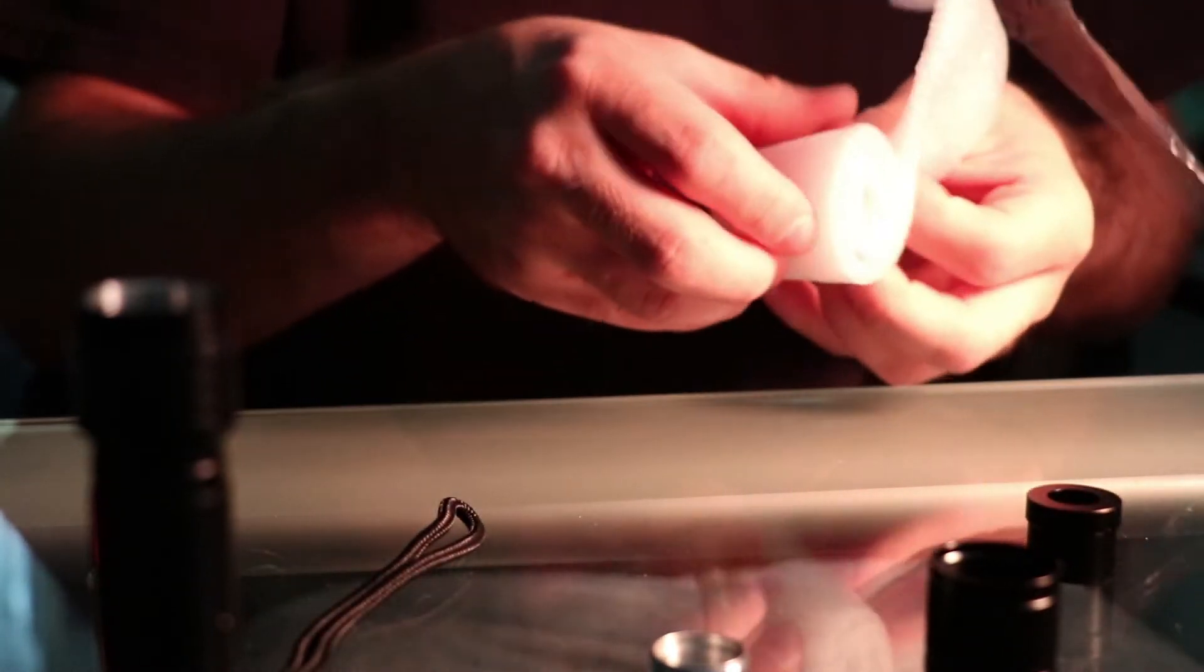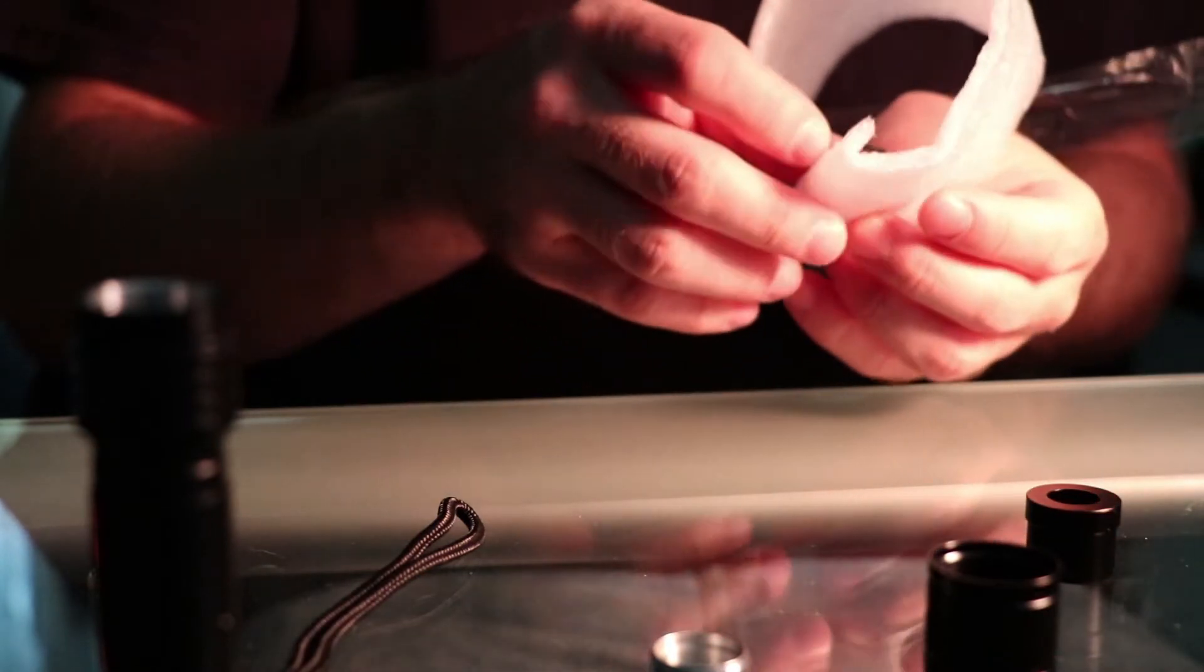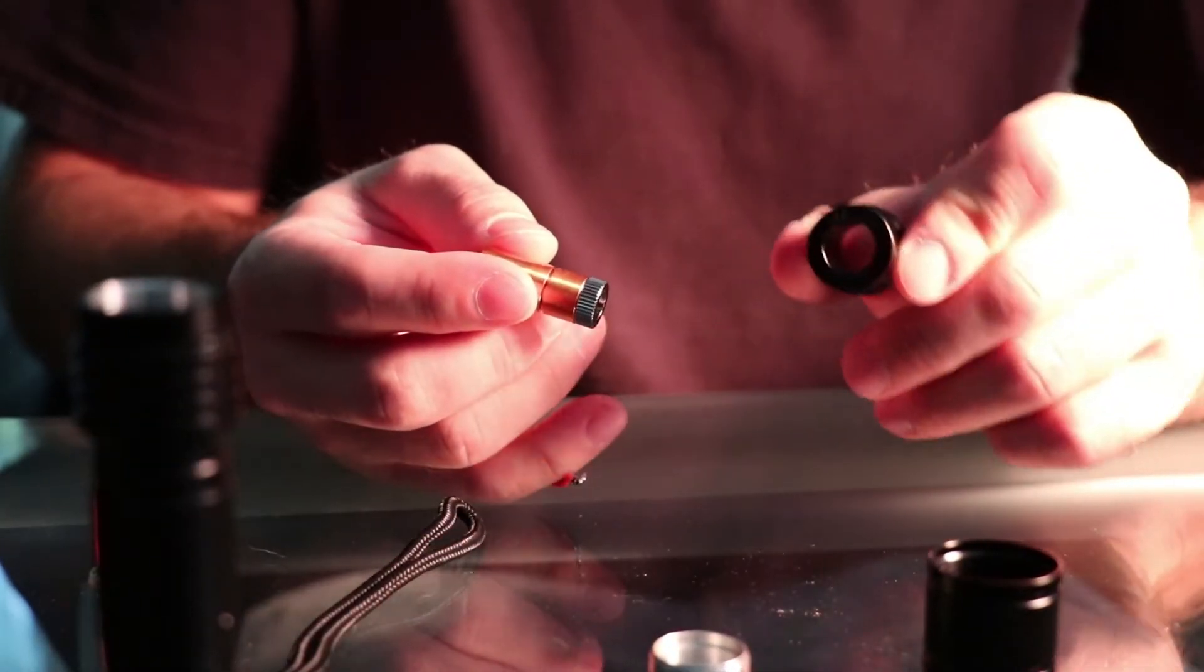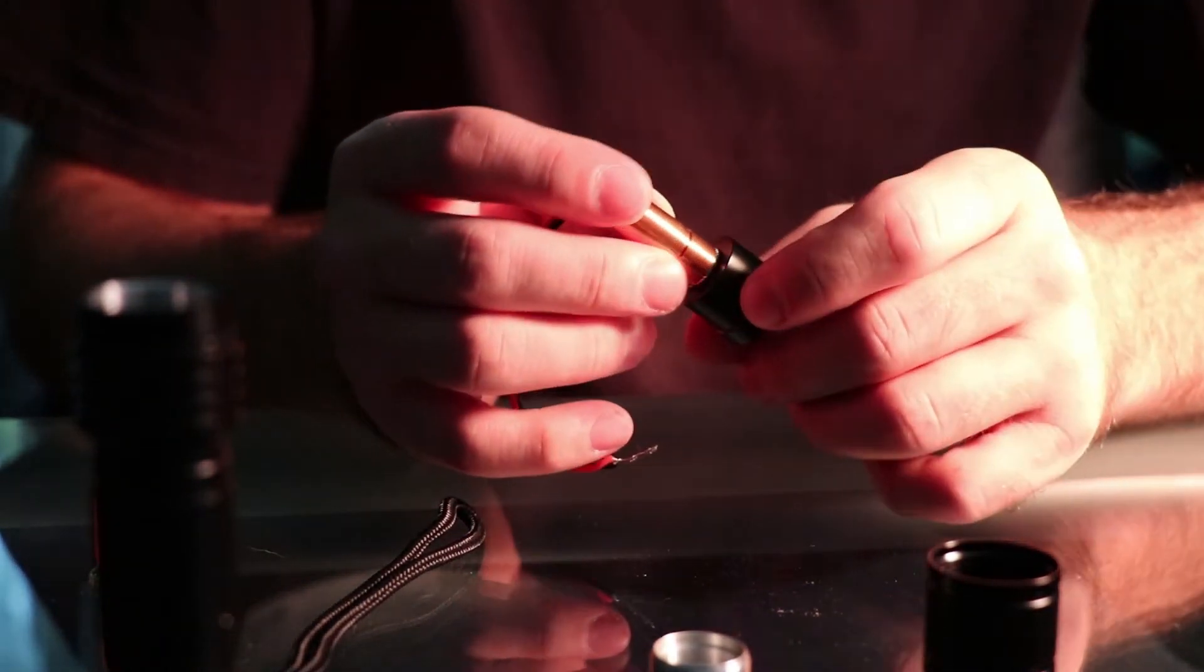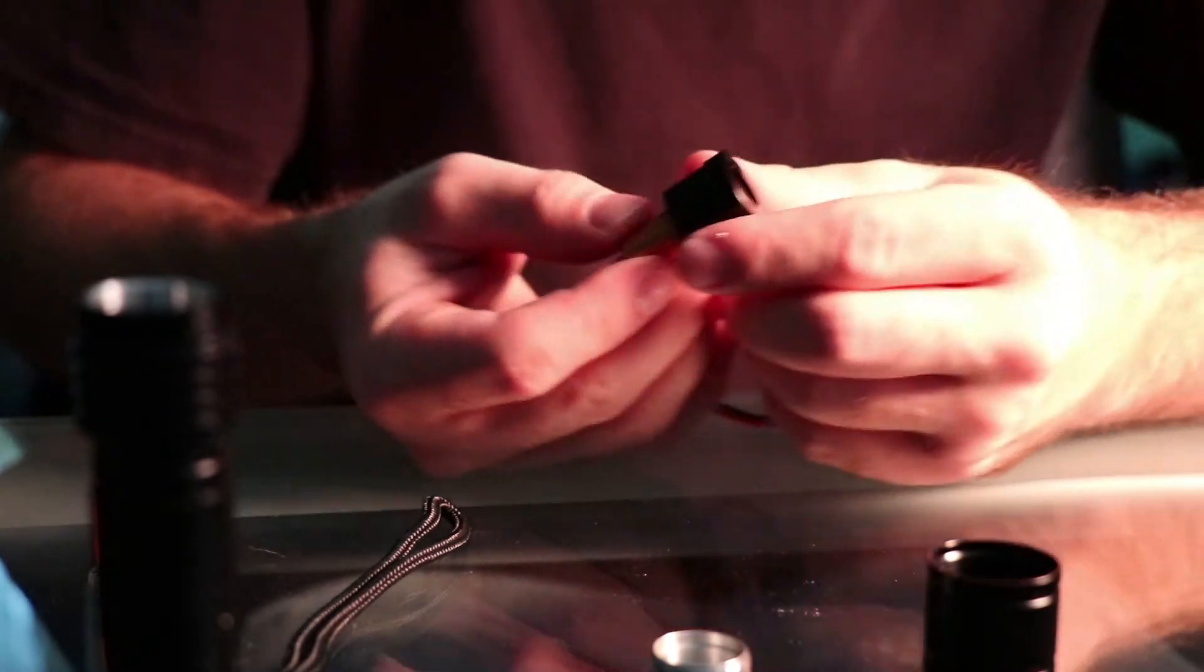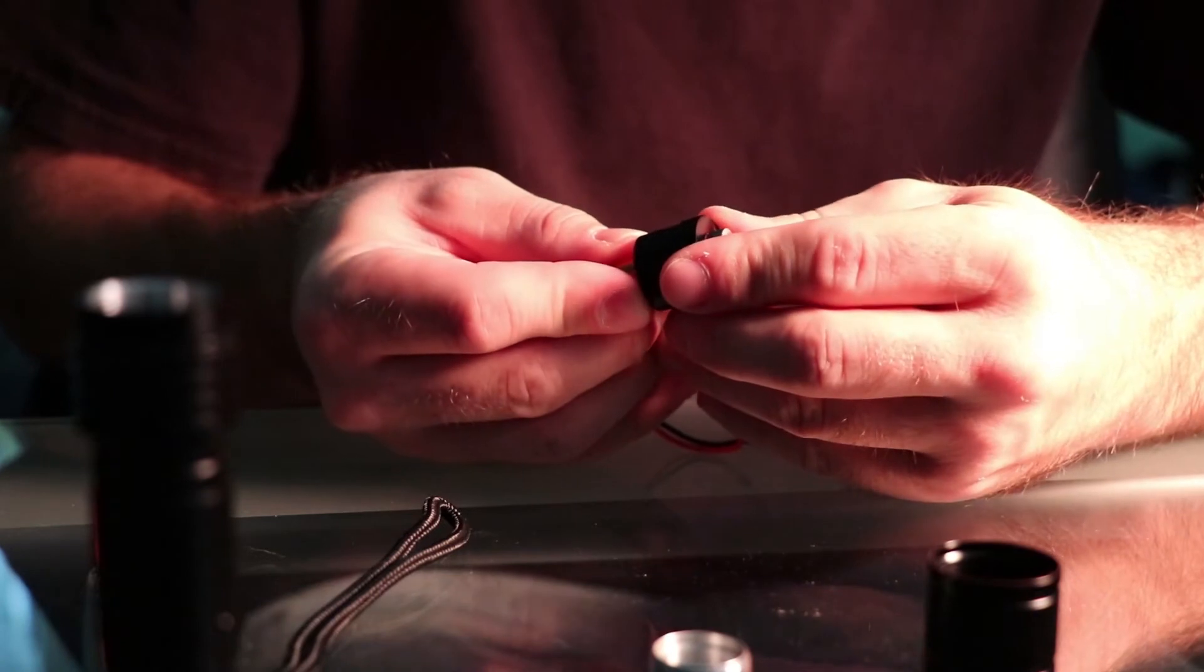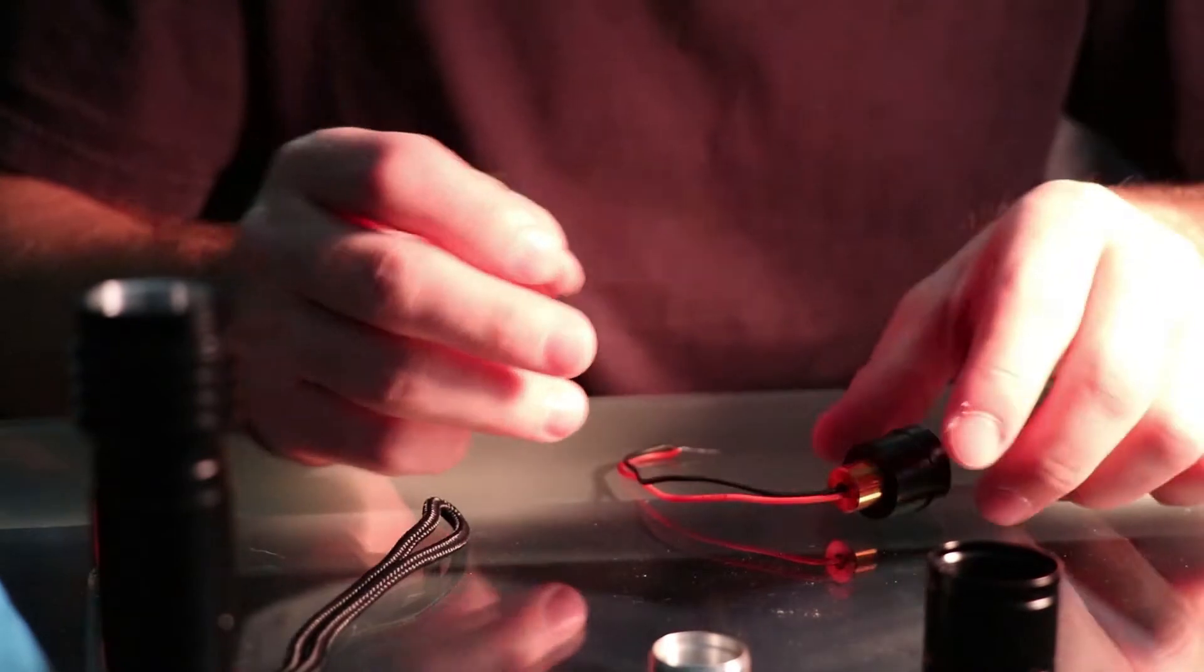This part you want to be really careful with is your diode. Whatever kind of diode you end up getting, doesn't really matter, still want to be careful with them, not pull pins out of the diode. So you take your diode and you slide it into the pill or the heatsink, sorry, ever so slightly. Make sure things are tight, careful with the wires. You want to slide it all the way through until it just pops out.